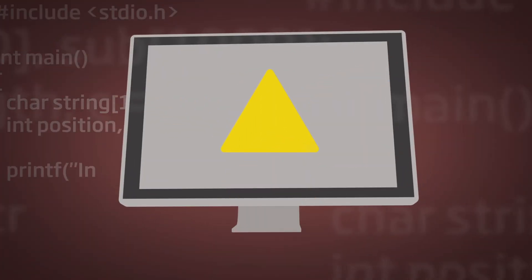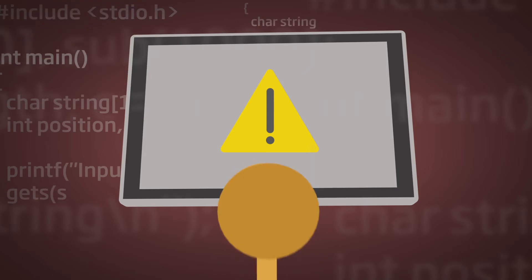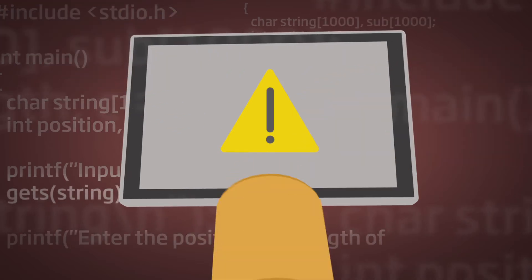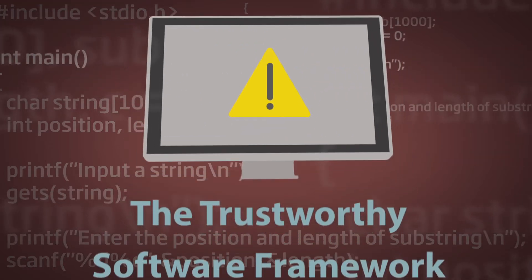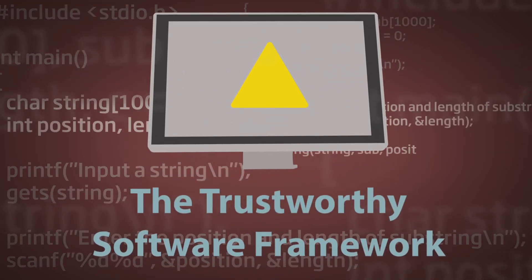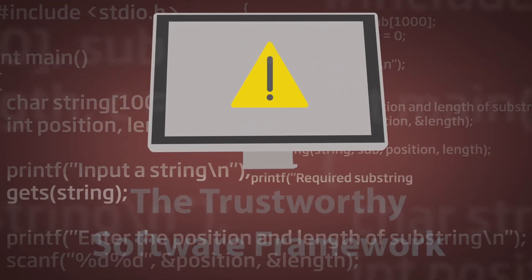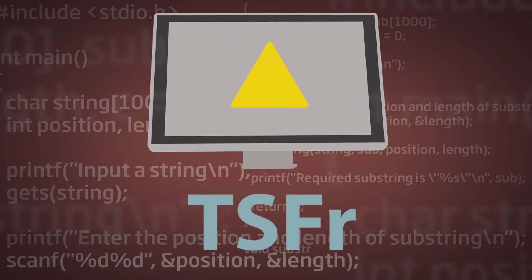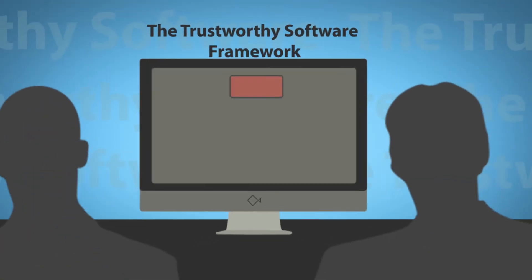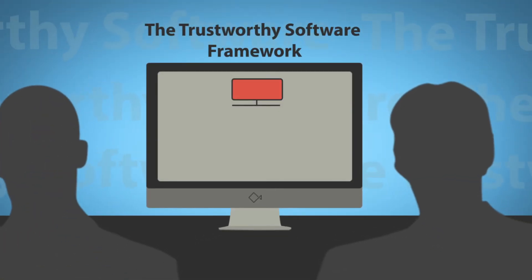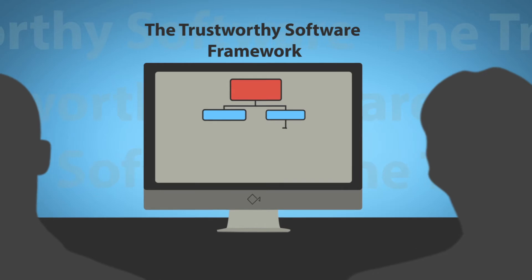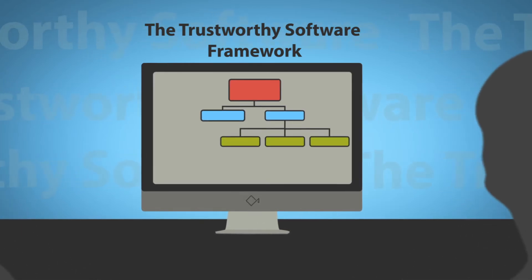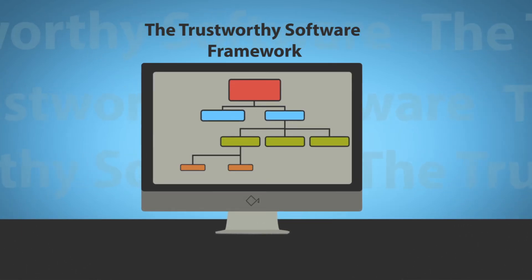Weaknesses, vulnerabilities, and susceptibilities can compromise every one of these facets, but the proper planning offered by the Trustworthy Software Framework, or TSFR, can help stop them happening. The Trustworthy Software Framework gives an overview of the appropriate levels of supervision offered by management.